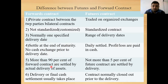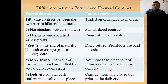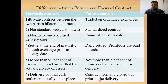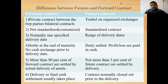More than 90% of forward contracts are settled by actual delivery of assets. In contrast, not more than 5% of futures contracts are settled by delivery — they are mostly settled by cash. In forward contracts, adjustment is done by delivery of the asset, whereas in futures the adjustment is done by cash. For futures, the contract is normally closed out prior to delivery. These are the main differences between futures and forward contracts. With this, we have completed this module of financial derivatives and will start the new module in the next lecture.